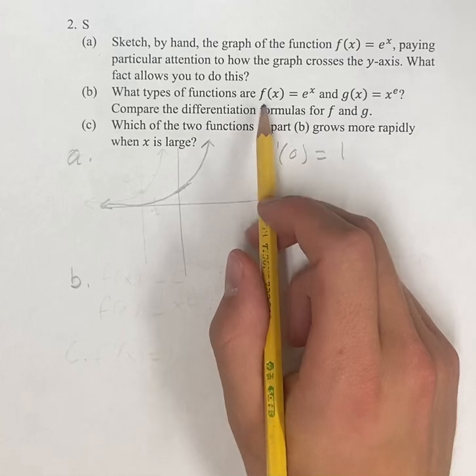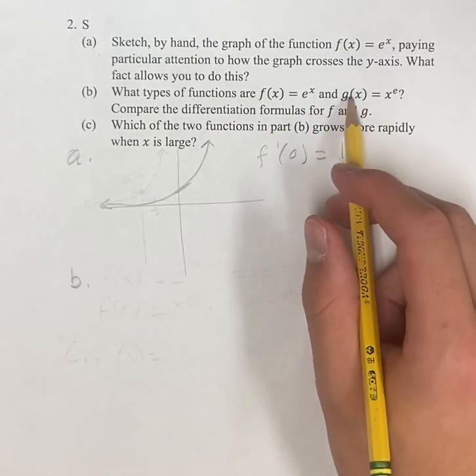Next in part b, what type of functions are f of x equals e to the x and g of x equals x to the e?